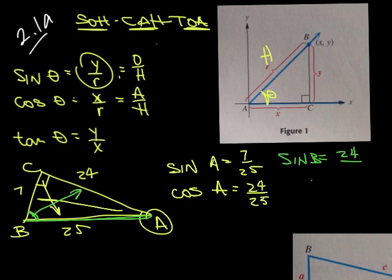My hypotenuse will be the same regardless of whether I'm finding the sine of A or the sine of B. The hypotenuse is always the longest one, and again, it's 25.